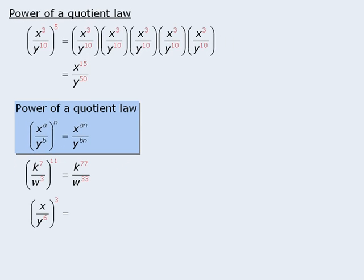Now to simplify this power of a quotient, we first rewrite x as x to the power of 1. Then we multiply the outer exponent 3 by the exponent in the numerator to get x to the power of 3. And then we multiply 3 by the exponent in the denominator to get y to the power of 18.